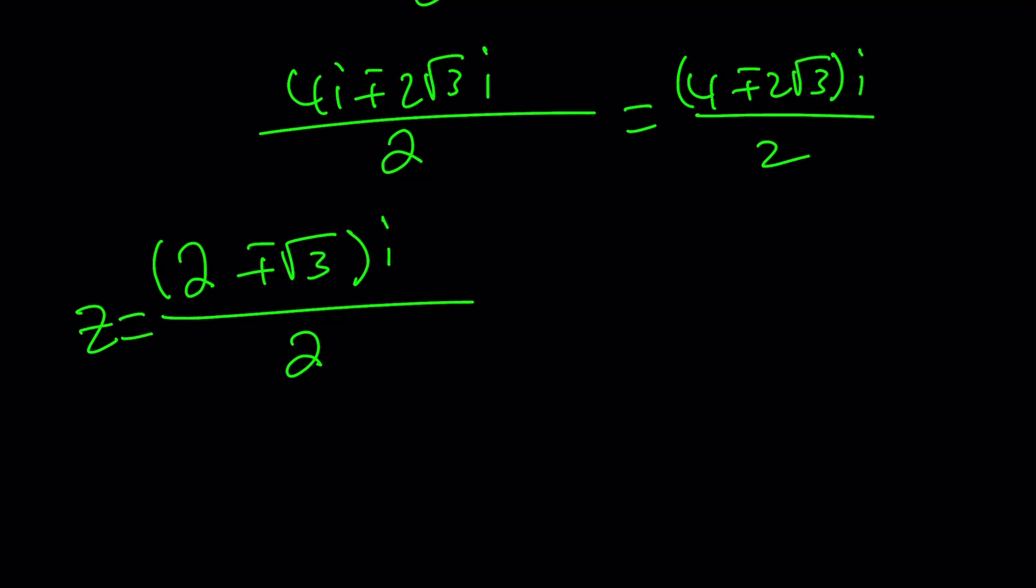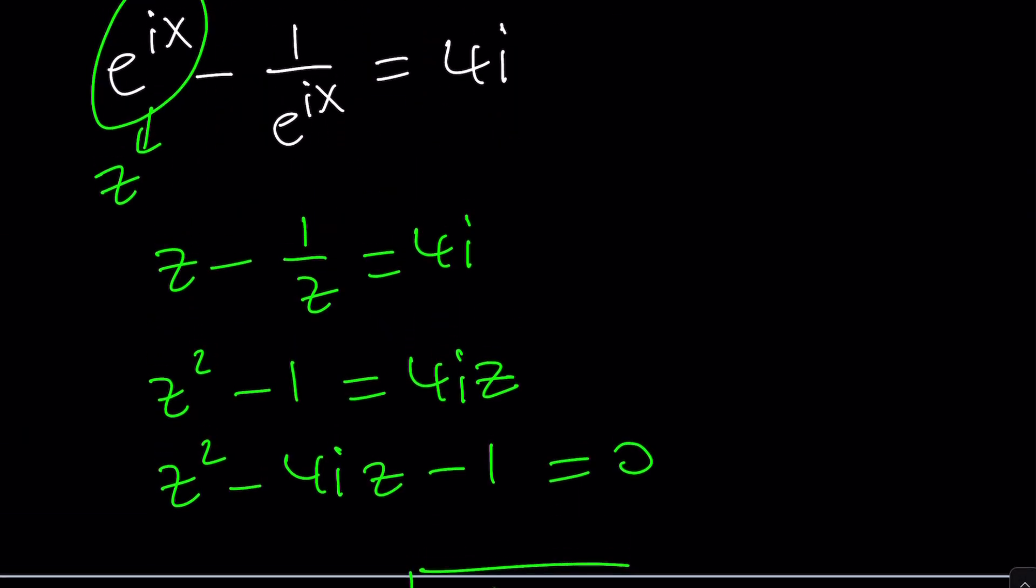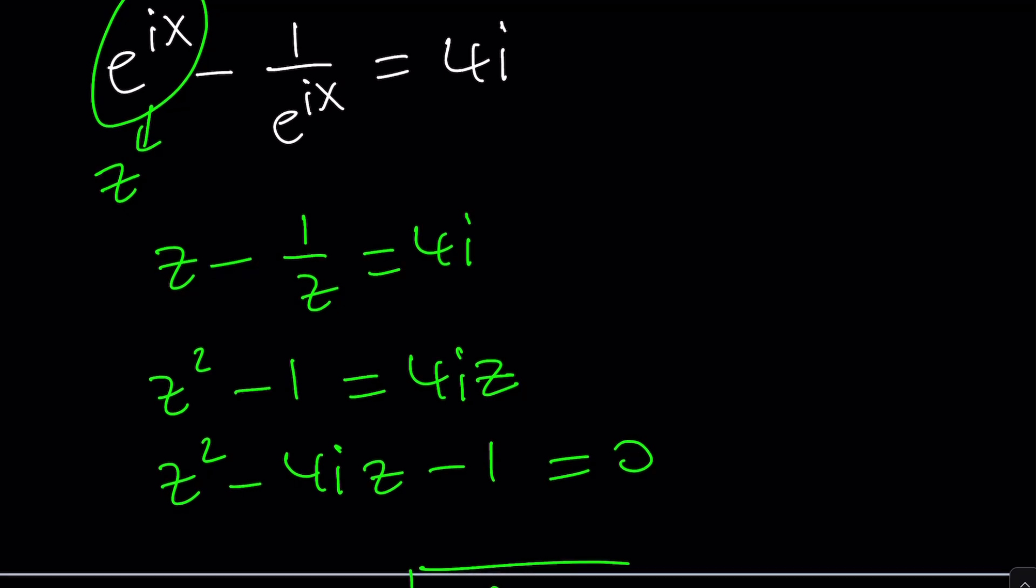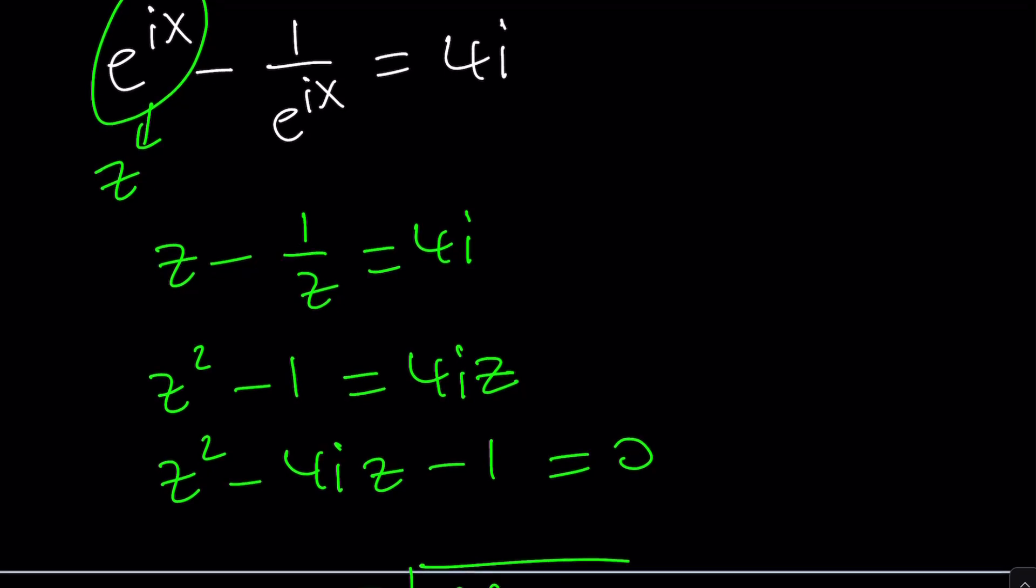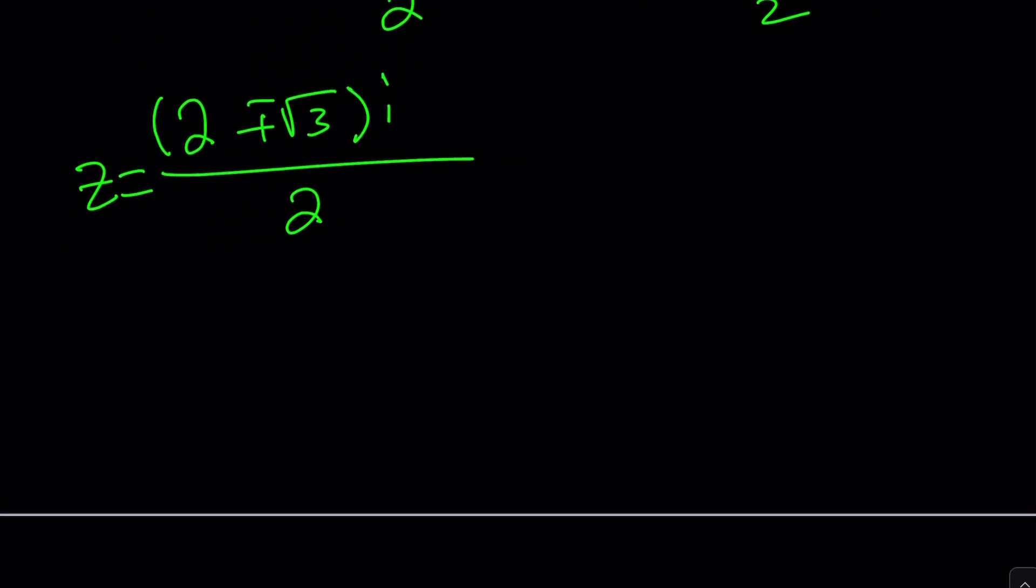And guess what? Those are going to be our z values. But what is z? Well, z is e to the power ix. Great. Let's replace z with e to the power ix. Because our goal, remember, is to solve for x values.